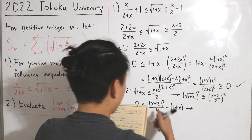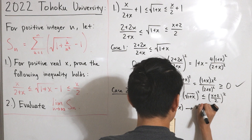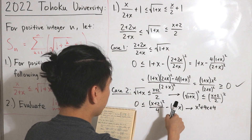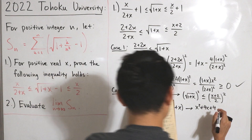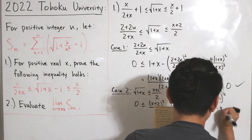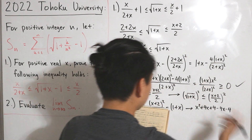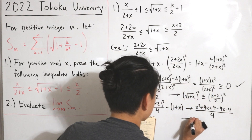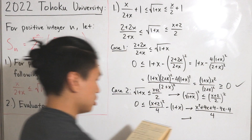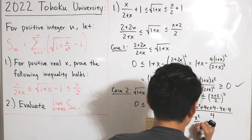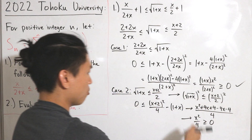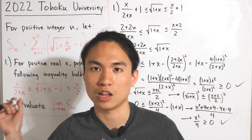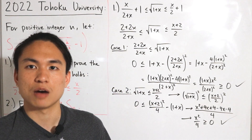Expanding (x+2)² = x² + 4x + 4, then getting a common denominator of 4: the numerator becomes x² + 4x + 4 − 4(1+x) = x² + 4x + 4 − 4 − 4x = x². So the expression simplifies to x²/4, which is always ≥ 0 for any positive real x. This confirms the center-right inequality, completing Part 1.